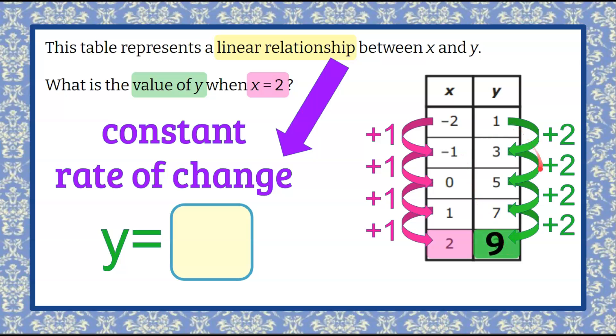We can see that as Y is increasing by 2, X is increasing by 1. We call that a constant rate of change, and all linear relationships have one. So we can conclude that when X equals 2, Y equals 9 in this linear relationship.